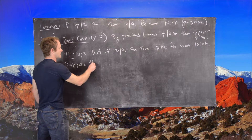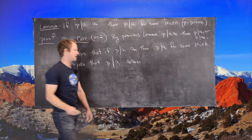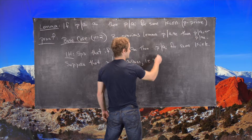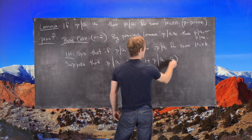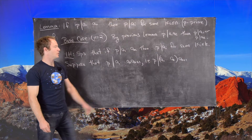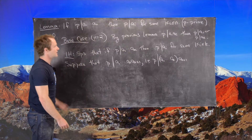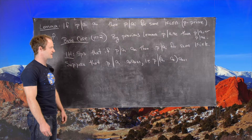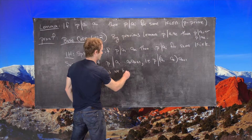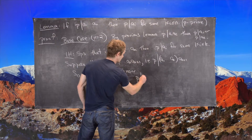For the induction step, suppose p divides a1 through ak+1, which can be written as p divides (a1·...·ak)·ak+1. Applying the previous lemma — the n=2 case — we get that p divides (a1·...·ak) or p divides ak+1.